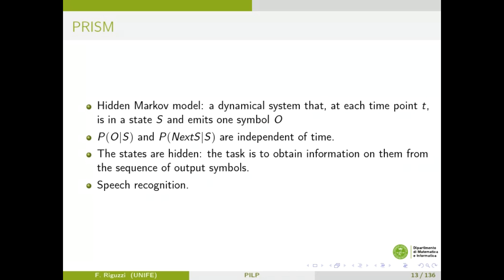The killer application of the hidden Markov model is speech recognition, where the speech is the emitted symbols and you want to infer the state, which is the sentence that was pronounced. In PRISM, choices are encoded with the predicate MSW (multi-switch). Each MSW atom is probabilistic: when you call it, it samples a value and returns it in the second argument. The switches have a name, and you set the parameters with the directive set_sw.